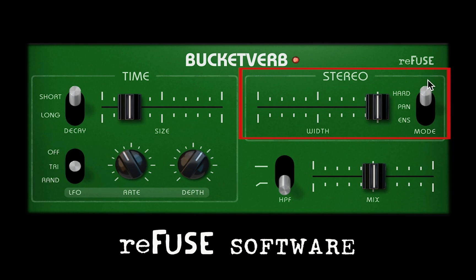The Stereo mode switch offers three different panning modes. In Hard Pan mode, the default, alternating delay taps are hard panned to the left and right channels. In Panimation mode, the delay taps start with alternate panning and are slowly modulated across the stereo field. The stereo locations of the taps are staggered and blended, so that the reverb sounds like it's coming from a surrounding location in the stereo field.